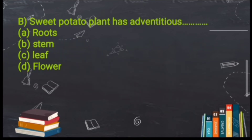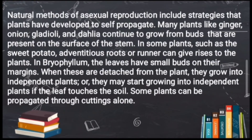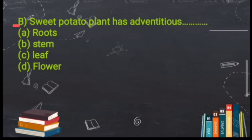Next question: Sweet potato plant has adventitious — (A) root, (B) stem, (C) leaf, (D) flower. Let's check the passage for information on sweet potato. It says: sweet potato has adventitious roots, and a runner can give rise to the plant. Focus is on roots, so option A — roots — is the correct answer. Sweet potato generates new offspring through adventitious roots.